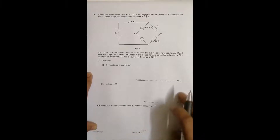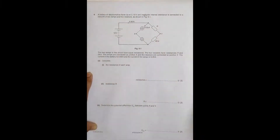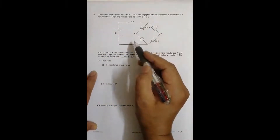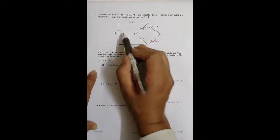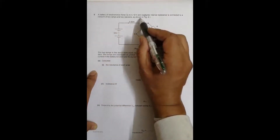Hello folks. Today it is the 2019 October/November Paper 23 and the question number is six. The question is concerned with the chapter current electricity. As you can see from the circuit diagram, it says that a battery of electromotive force 12 volts — with negligible internal resistance — is connected to a network of two lamps and two resistors.